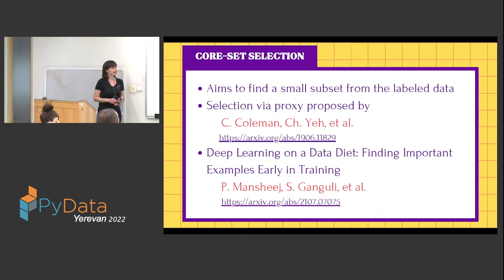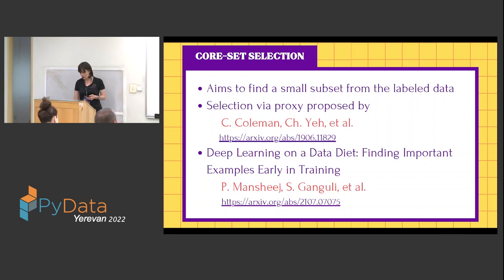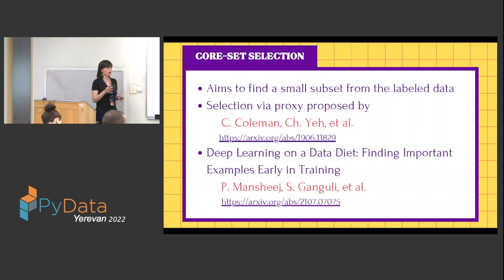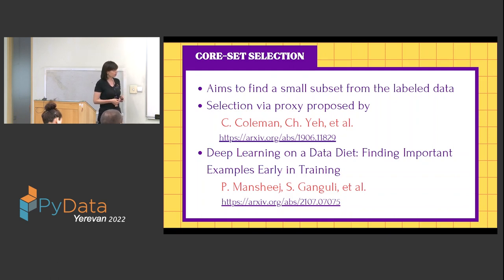The next method is core set selection. In core set selection, we label the whole dataset and work with the labeled data. Our goal is to select a small representative subset from the entire already-labeled dataset. We are not reducing labeling time, but with core set selection, we have a chance to have a better dataset and reduce training time.